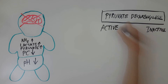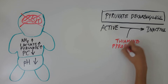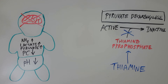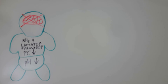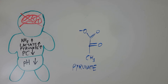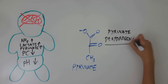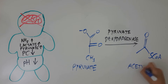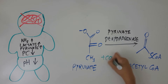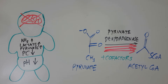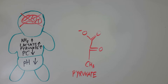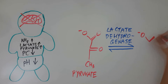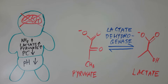Thiamine works by inhibiting the phosphorylation of the pyruvate dehydrogenase complex via thiamine pyrophosphate. Therefore, pyruvate dehydrogenase remains in its active form and facilitates the oxidation of pyruvate. Furthermore, thiamine and lipoic acid are cofactors of pyruvate dehydrogenase. By increasing cofactors of pyruvate dehydrogenase, pyruvate concentration decreases as it is converted to acetyl-CoA. Lactic acid dehydrogenase is a near-equilibrium enzyme; therefore, with a decrease in pyruvate, it oxidizes lactate back into pyruvate, thereby decreasing lactate levels in the blood.